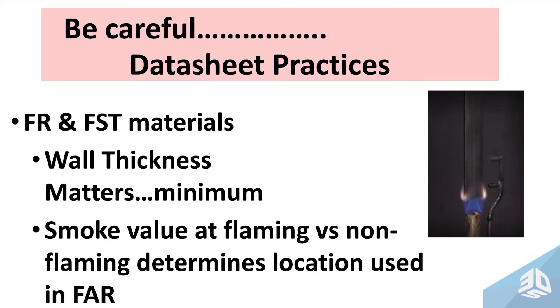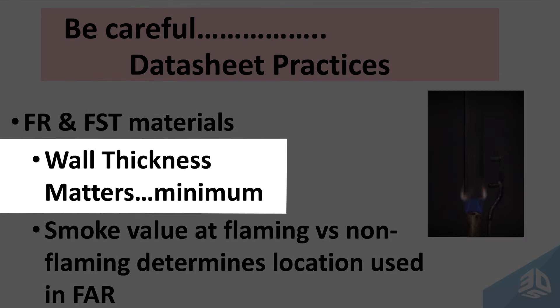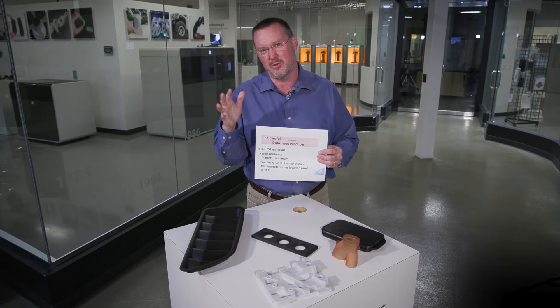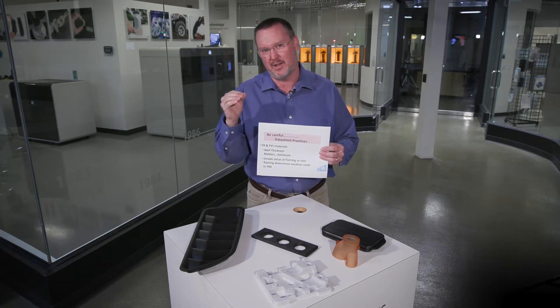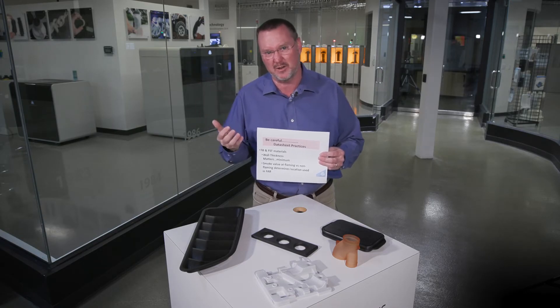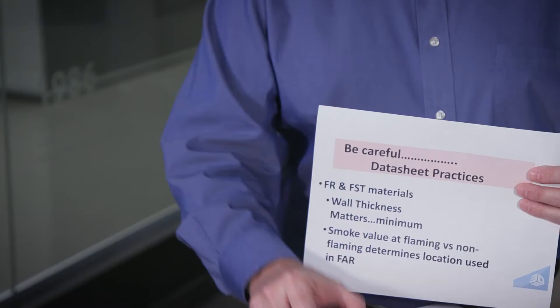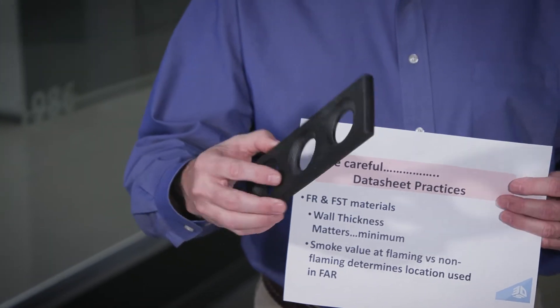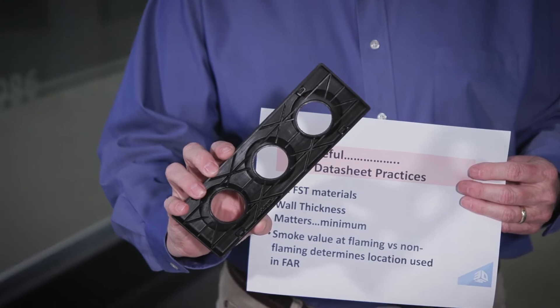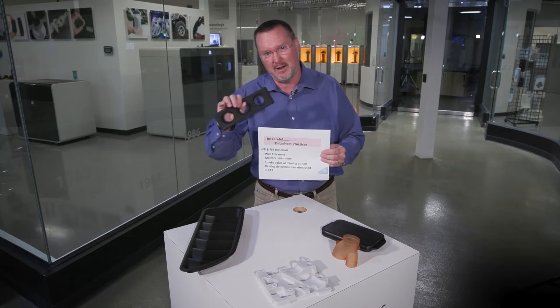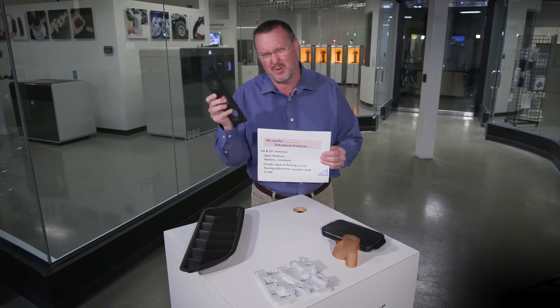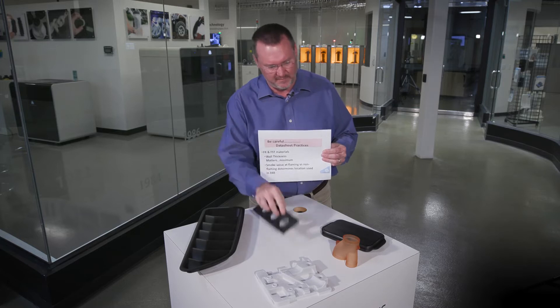Next, let's look at FR and FST materials. If you look at those on a data sheet, they should be specified with wall thickness. The typical wall thickness you're going to see is two and a half to three millimeters, because that's typically what you see for covers — such as a light cover for an aerospace application. For FSTs, you'd want to look at the FAR 12-second or 60-second value and see what the thickness is. Two to three millimeters is generally what you're looking for.